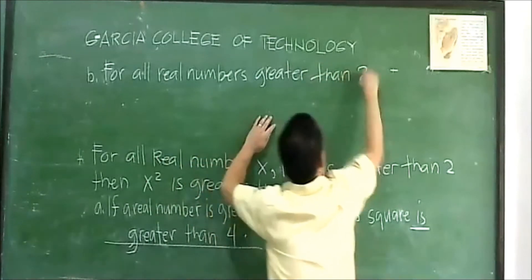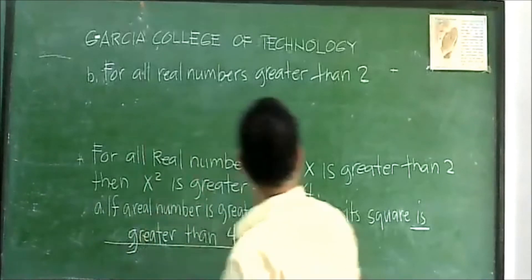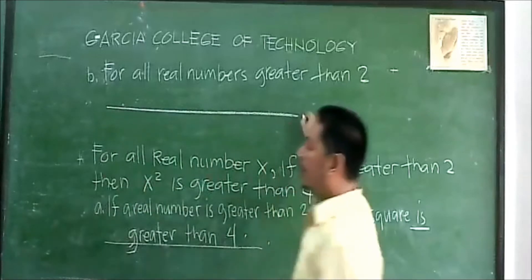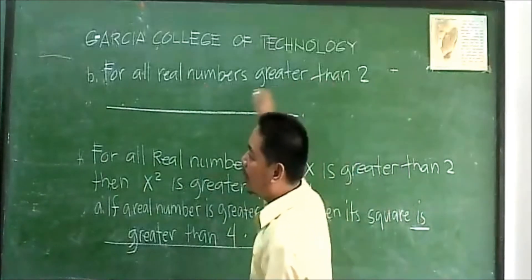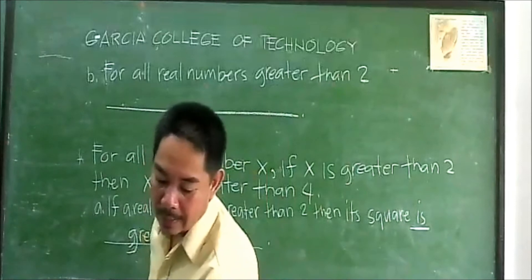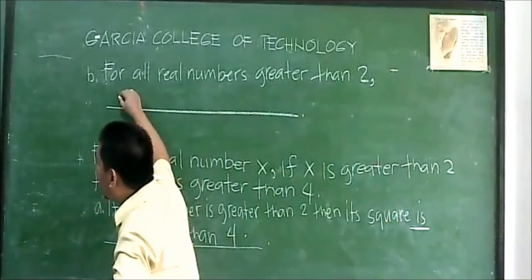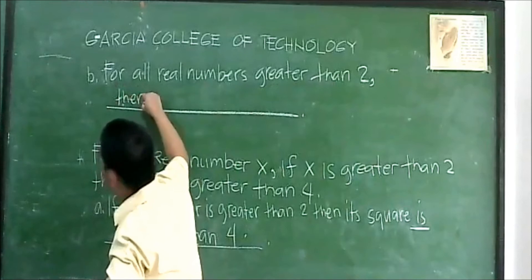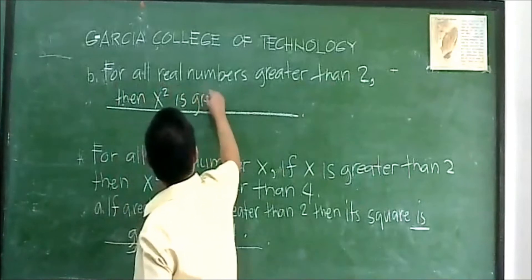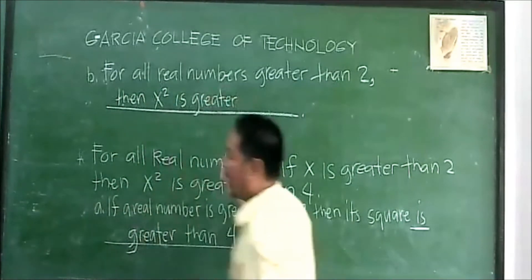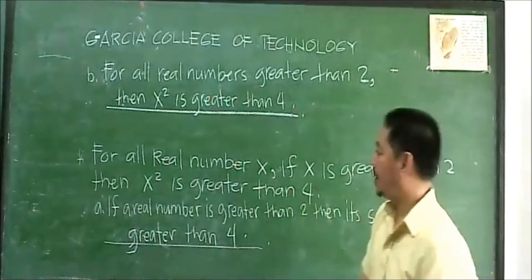Then x squared is greater than 4. What is your answer? For all real numbers greater than 2, then x squared is greater than 4. Greater than 4. Okay, so let's erase this.